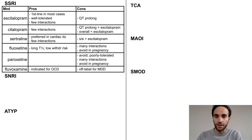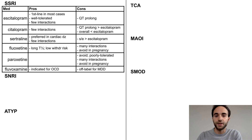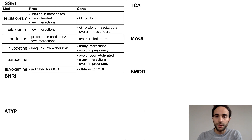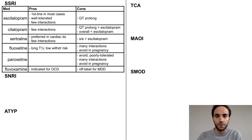Sertraline also has few drug interactions, and for this reason, as well as the fact that it has a lower risk of QT prolongation, it is the preferred antidepressant in cardiac disease. Fluoxetine is unique for its long half-life, which allows it to auto-taper and limits the risk of serotonin withdrawal. However, it is a strong CYP inhibitor, therefore having many drug interactions. Paroxetine is an older SSRI with worse side effects and more drug interactions than the others.